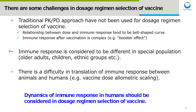Second, while vaccines are injected to various populations such as older adults, children, and different ethnic groups, immune response is considered to be different in each special population. Third, there is a difficulty in translation of immune response between animals and humans. Therefore, we think the dynamics of immune response in humans should be considered in dosage regimen selection of a vaccine to address these difficulties.